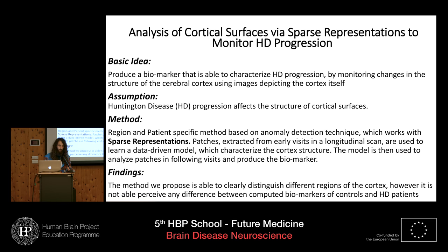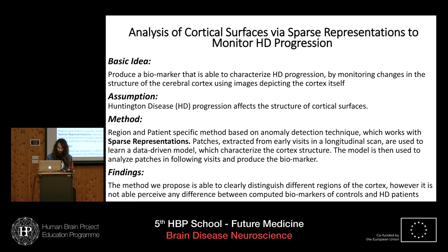The goal of our study was to design a biomarker meant to monitor the progression of Huntington's disease. We do that by analyzing the structure from cortical thickness surfaces, treating them in a patchwise manner. In particular, we exploited an anomaly detection technique which worked with sparse representation and dictionary learning. We found that the method wasn't able to produce a biomarker able to monitor progression, but our method was able to distinguish the different regions of the cortex.